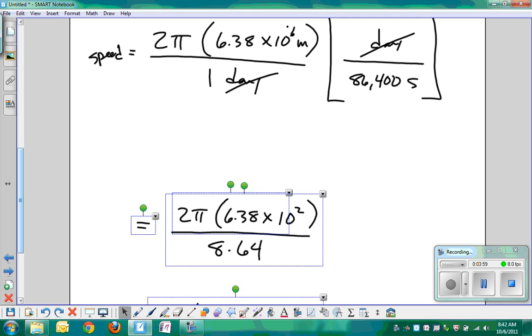Sometimes I do too many steps at once. That's equal to 2π × 6.38 × 10^6 over 8.64 × 10^4. Then I canceled those down. That is 4.639 × 10^2 meters per second. So that's the speed in meters per second.